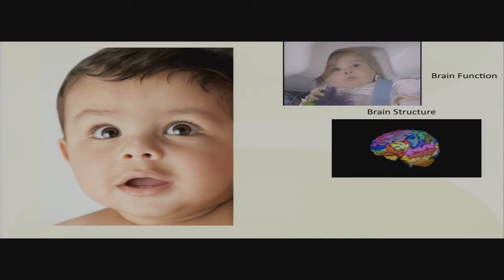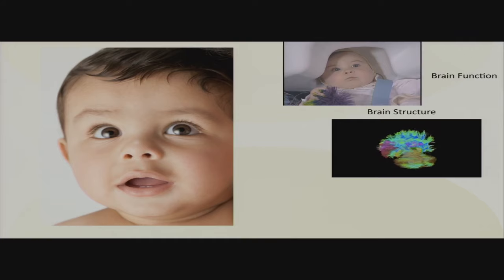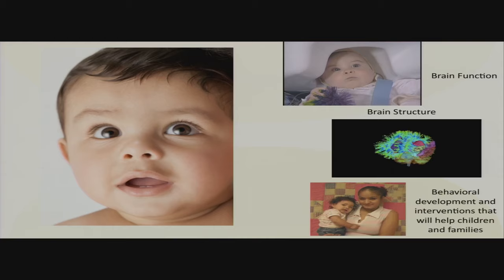At the same time, we're trying to combine images of function with structure, looking at traditional segmentation, VBM, DTI, quantitative MRI now, doing that in the service of the basic questions about the science of human learning and development. We're also attempting to take that research and move towards translational studies that demonstrate we can change the course of learning in children with autism, with dyslexia, and with various disabilities involving language.